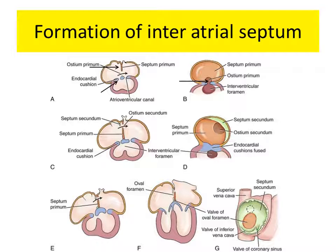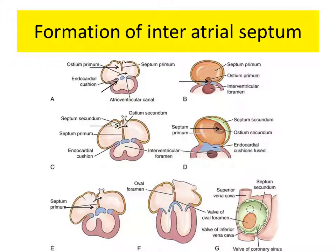Slowly, the septum primum meets the AV cushion. At this juncture, we don't want the total separation of the right and the left side of the heart. So this is compensated by the formation of another opening at the upper end of the septum primum, which we now call the ostium secundum. Now towards the right side of the septum primum, another partition starts growing down — the septum secundum. It starts moving towards the endocardial cushion, resulting in the formation of an oblique passage. This directs blood from the right to the left side of the heart and is now called the foramen ovale.